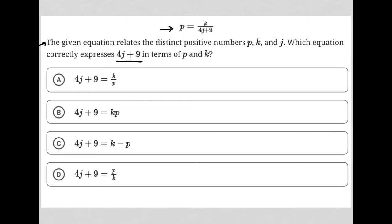As we can see from the answer choices, expressing 4j plus 9 in terms of p and k simply means that we are looking to isolate the 4j plus 9. We want that to be the only thing we have on the left-hand side of the equation.